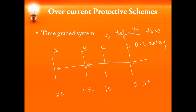Say a fault occurs at a point beyond D. After 0.5 seconds, the circuit breaker at D will operate and the fault is cleared. In case the circuit breaker at D fails to trip, it will wait another 0.5 seconds — meaning only after 1 second will circuit breaker C trip. If B, C, and D all fail to operate, the fault will remain for 2 seconds and circuit breaker A will trip at 2 seconds. So the nearby circuit breaker must detect and trip, else it will cause damage to the entire feeder. There is a disadvantage in this time graded system.